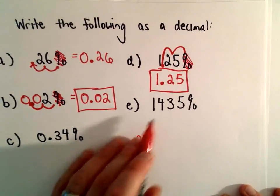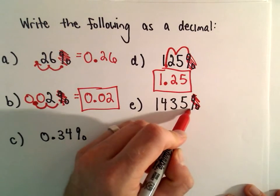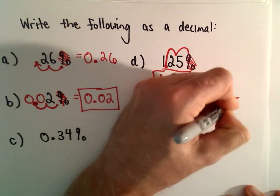1435%. Same thing, get rid of the percentage, move it two places, that'll be 14.35.